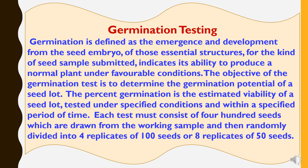Germination testing. Germination is defined as the emergence and development from the seed embryo of those essential structures which indicate the ability to produce a normal plant under favorable conditions. The objective of the germination test is to determine the germination potential of a seed lot. The percent germination is the estimated viability of a seed lot tested under specified conditions and within a specified period of time. Each test must consist of 400 seeds drawn from the working sample, randomly divided into four replicates of 100 seeds or eight replicates of 50 seeds.